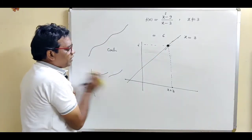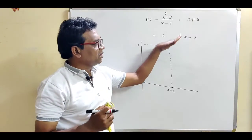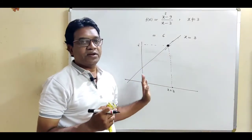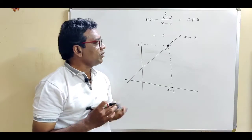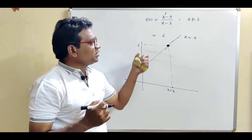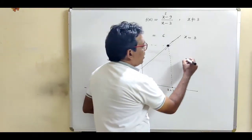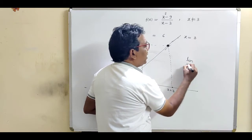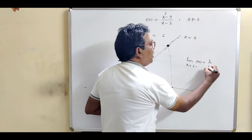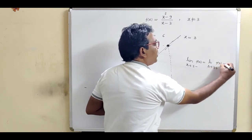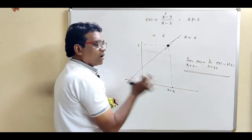Continuity means if we draw the curve without lifting the pen, it is called the continuous function. So this example gives us the continuous function. Now, what is the mathematical definition of continuity? Continuity means if the limit from left equals the limit from right equals the value of the function, then the function is said to be continuous.